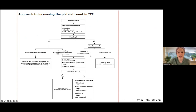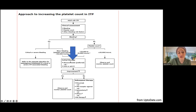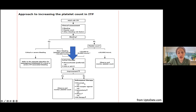If their platelet count is less than 20, your initial therapy is pretty universal: steroids or IVIG for these patients. Then you look for improvement. If they don't improve, you go to your other second-line therapies.